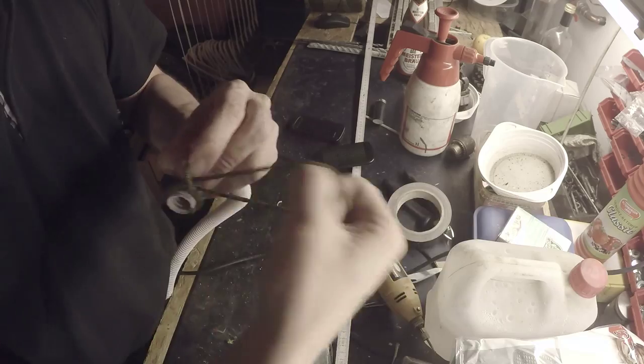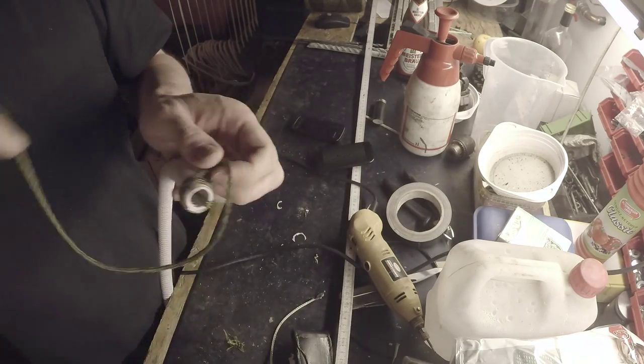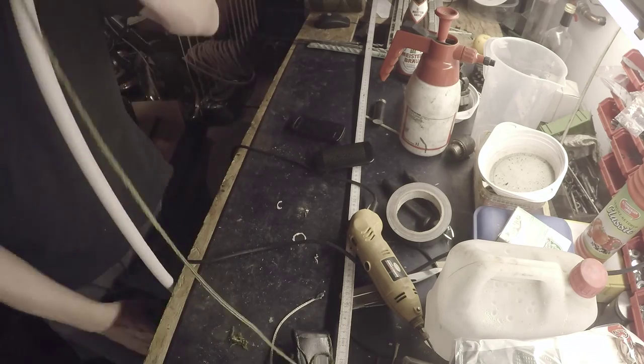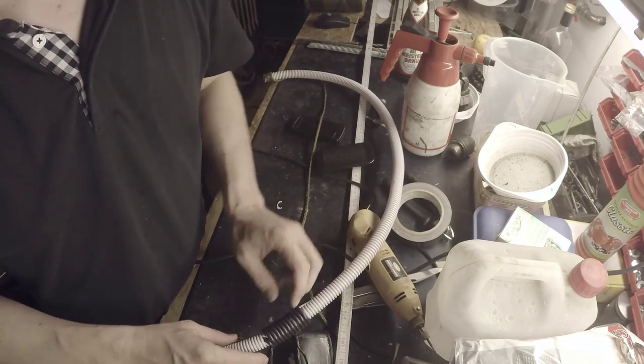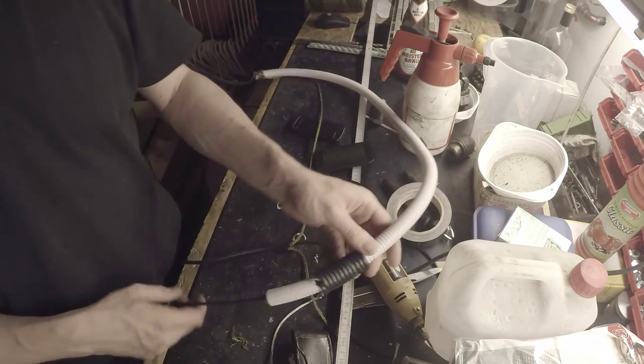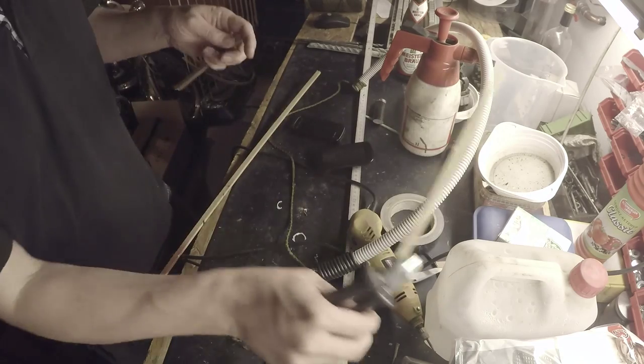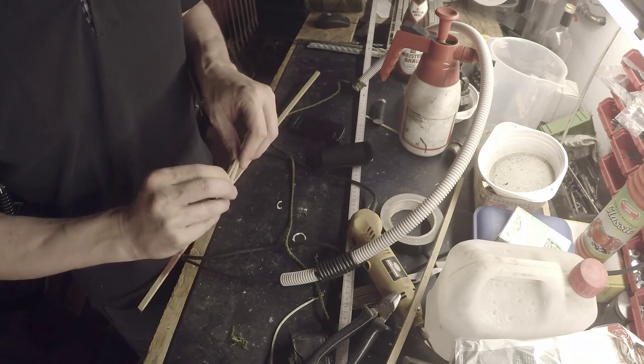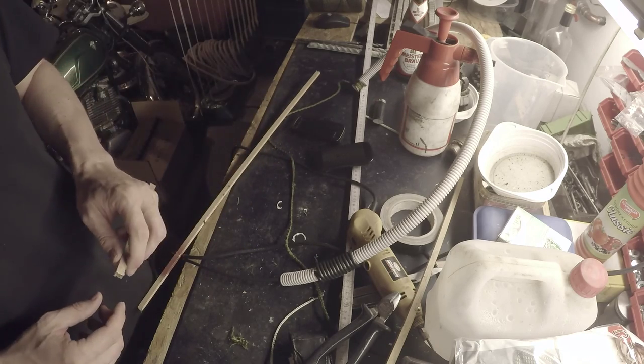Then just pull the inside wire straight a bit, so it gets stretched and you could attach the antenna to some point. It's important that the coil is straight.